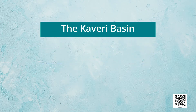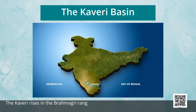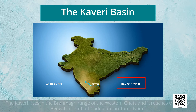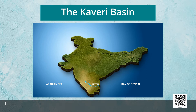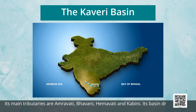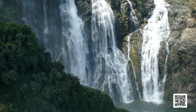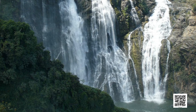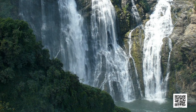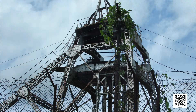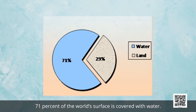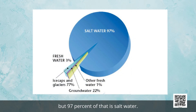The Kaveri rises in the Brahmagiri ranges of the Western Ghats and reaches the Bay of Bengal south of Cuddalore in Tamil Nadu. The total length of the river is about 760 kilometers. Its main tributaries are the Amaravati, Bhavani, Hemavati, and Kabini. Its basin drains parts of Karnataka, Kerala, and Tamil Nadu. The river Kaveri makes the second biggest waterfall in India, known as Shivasamudram. The hydroelectric power generated from the falls is supplied to Mysore, Bangalore, and the Kolar Gold Fields.